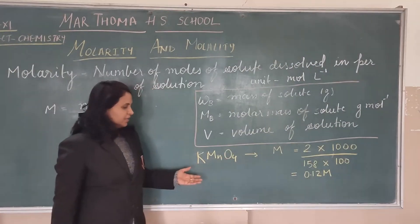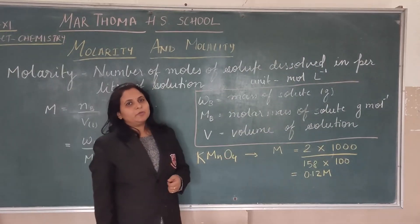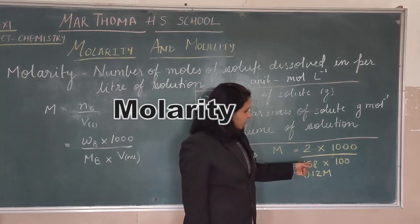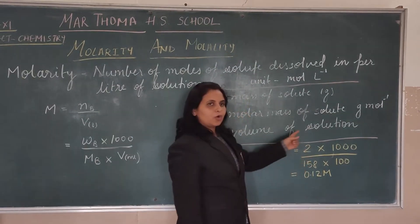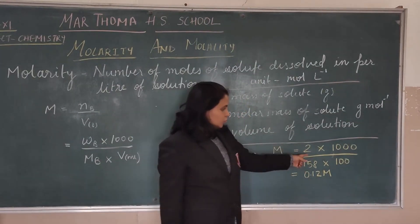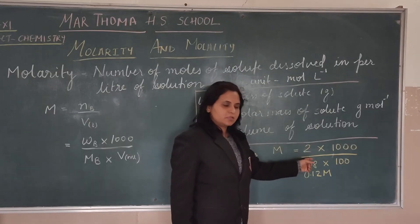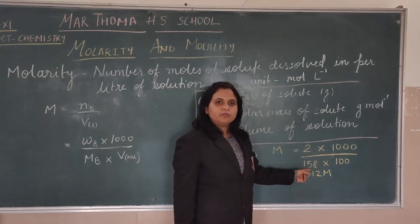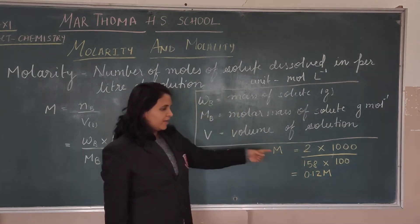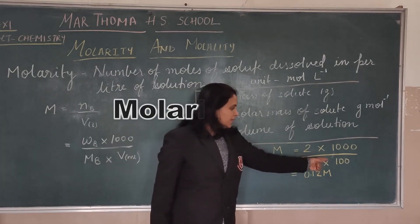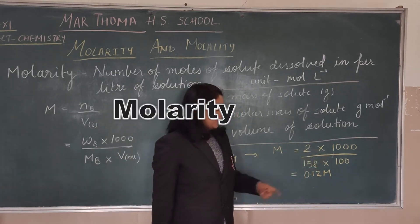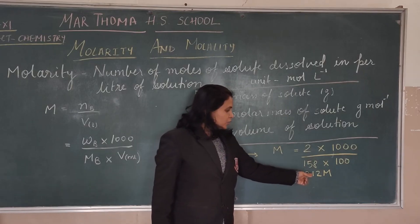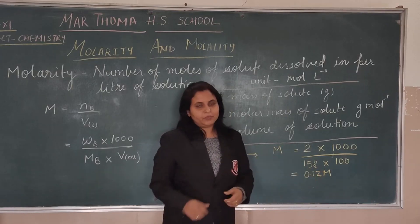One example: if we prepare a KMnO₄ solution and take 2 grams of KMnO₄, then according to this formula — 2 (mass of solute in grams) multiplied by 1000, upon 158 (the molar mass of KMnO₄) multiplied by 100 — the prepared solution will be 0.12 M.